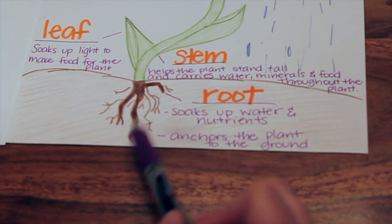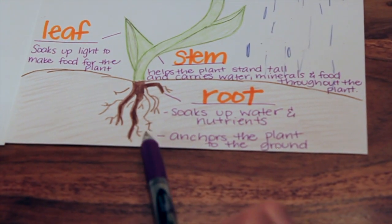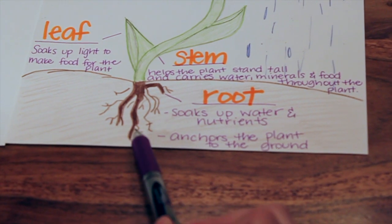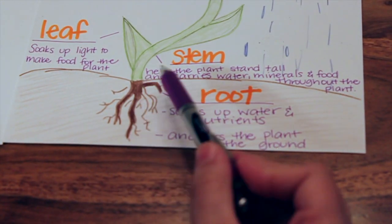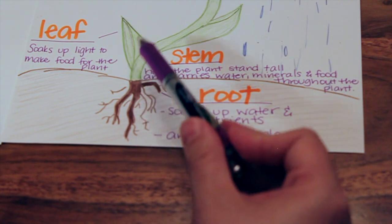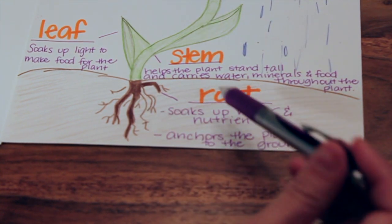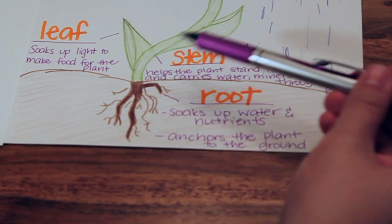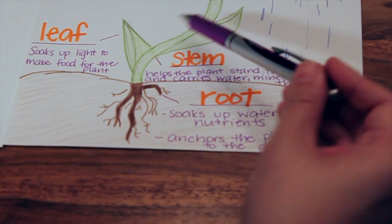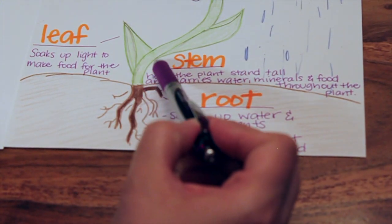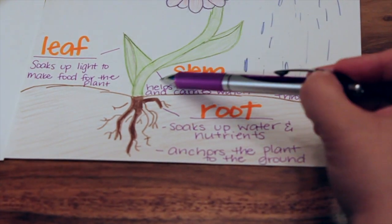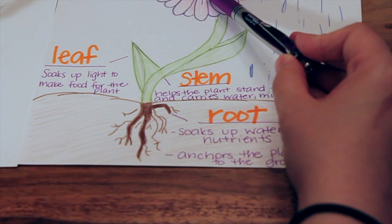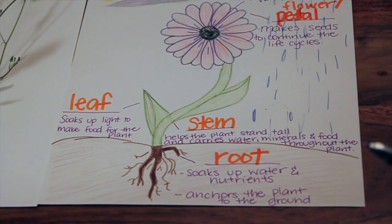One of the most important parts of the plant is called the root. It soaks up water and nutrients from the ground and it anchors the plant to the ground. Because of the root, when you water your plant it takes that water and distributes it up the stem. The leaf helps by adding nutrients from the sun, and then the stem takes it up to the flower so it can concentrate on making seeds.